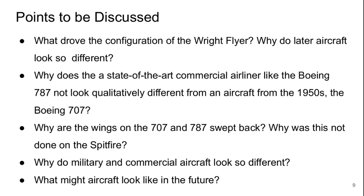Here are the various points I want to discuss based on those four images. What drove the configuration of the Wright Flyer and why do later aircraft look so different? Why does a state-of-the-art commercial airliner like the Boeing 787 not look qualitatively different from an aircraft from the 1950s, the Boeing 707? Why are the wings on the 707 and the 787 swept back? Why was this not done on the Spitfire? Why do military and commercial aircraft look so different? And what might aircraft look like in the future?